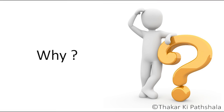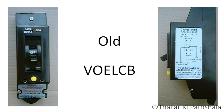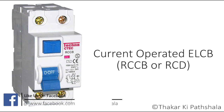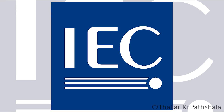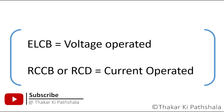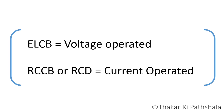Let's look at how this great confusion occurred. Voltage operated ELCBs were introduced many years ago, and then some years later current operated devices were introduced. They were also called ELCBs because they were doing the same thing — it was an easy-to-remember and popular name, and people had already gotten used to it. But this created great confusion in the industry. So the IEC decided to give a different name to current operated devices and termed them RCCB or RCD. The confusion originates from that time and is still present today.